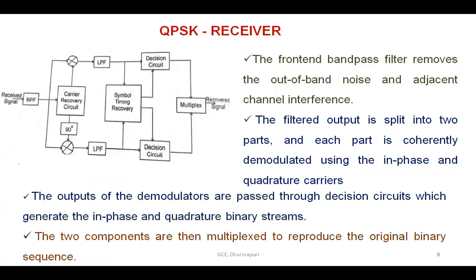This is the block diagram of the QPSK receiver. The front-end bandpass filter (BPF) removes out-of-band noise and adjacent channel interference. The filtered output is split into two parts and each part is coherently demodulated using the in-phase and quadrature carriers. The outputs of the demodulator are passed through detection circuits which generate the in-phase and quadrature binary streams. The two components are then multiplexed to reproduce the original binary sequence.